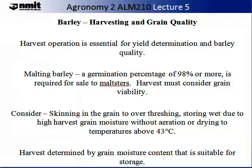When you come to harvest barley, you need to consider the grain quality. Harvest operation is also essential for yield determination. If you are growing malting barley, a germination percentage of 98% or more is required for sale to most maltsters. Harvest must consider grain viability and this is why the moisture content is so important. You need to also consider skinning in the grain, over-threshing, and storing wet due to high harvest grain moisture without aeration or drying to temperatures above 43°C.